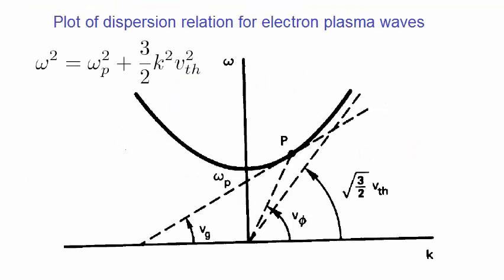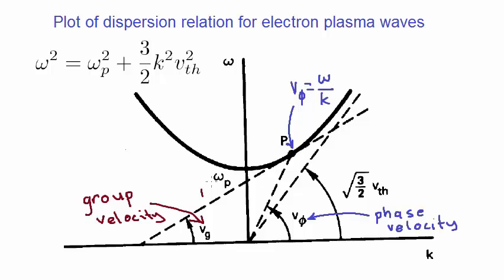Let's plot the dispersion relation and look at some of its features. The slope of the line between a point on the curve P and the origin is the phase velocity, given by Omega on K. A tangent to the curve is the group velocity, given by d Omega dK.